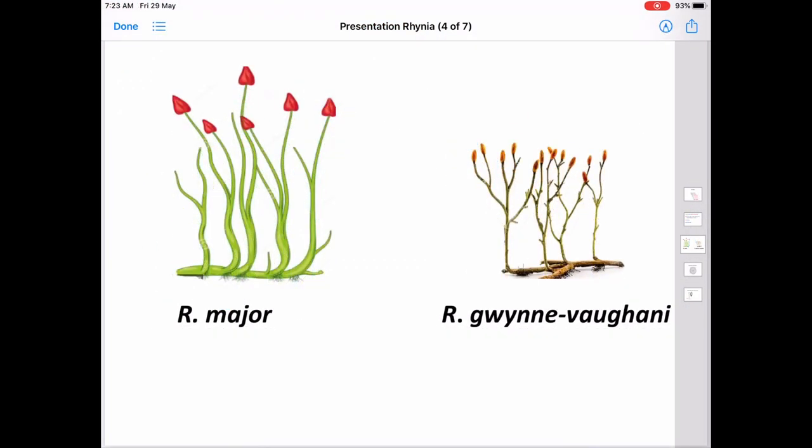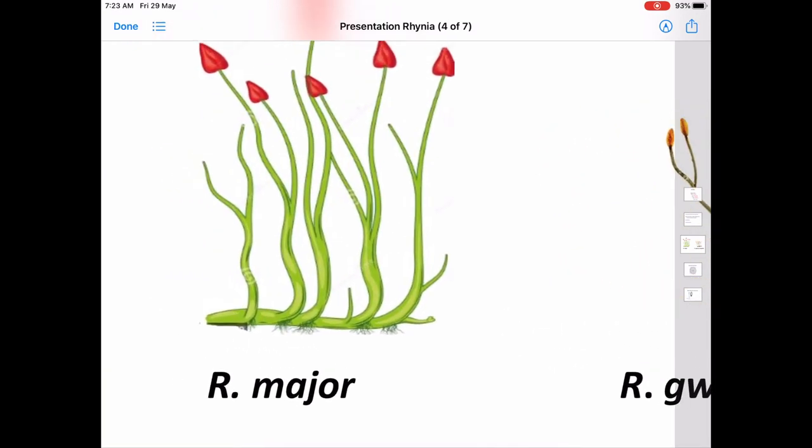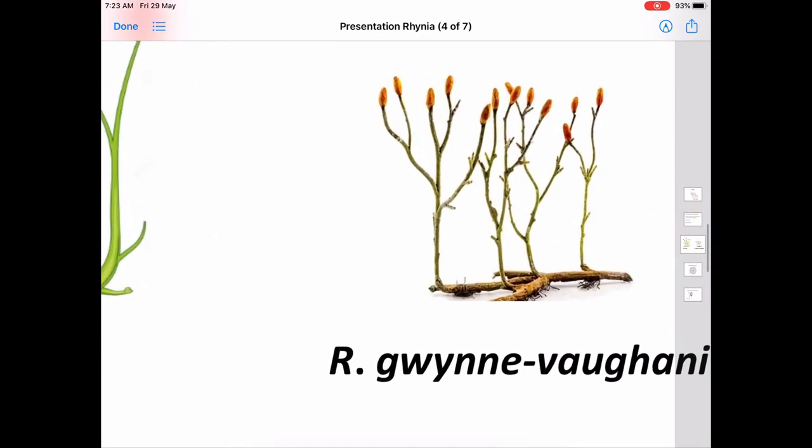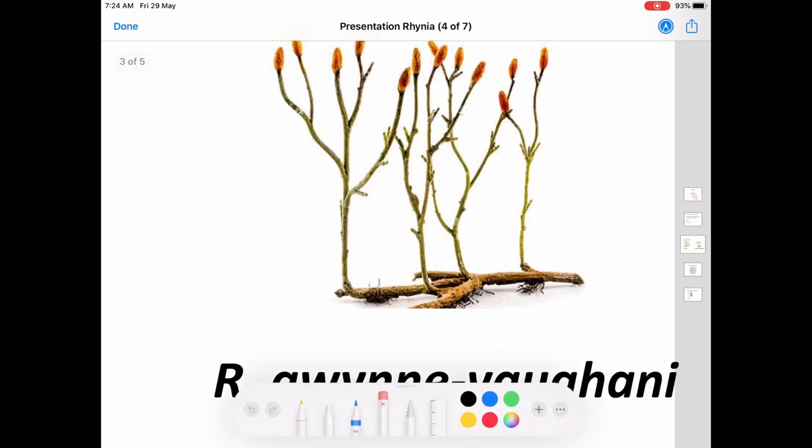The main difference between Rhynia major and Rhynia gwynne-vaughanii is that in Rhynia major, the shoot is smooth. But in Rhynia gwynne-vaughanii, you can see small adventitious branches, which make the plant rough in appearance.